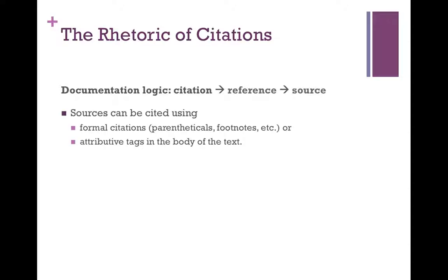Sources can be cited in one of two ways. The first is formal citations — the kinds of things laid out in style guides. MLA uses parenthetical citations with the author's last name and page number, if applicable, at the end of a sentence. APA also uses parenthetical citations. Chicago uses footnotes. Some scientific and engineering styles use numbers within brackets. You can look up how to use the formal citations for your style guide of choice.